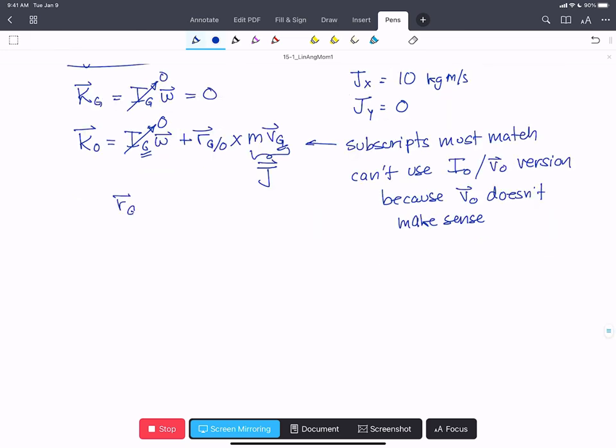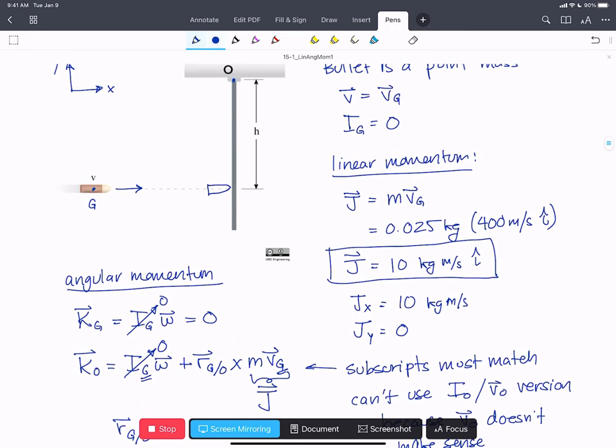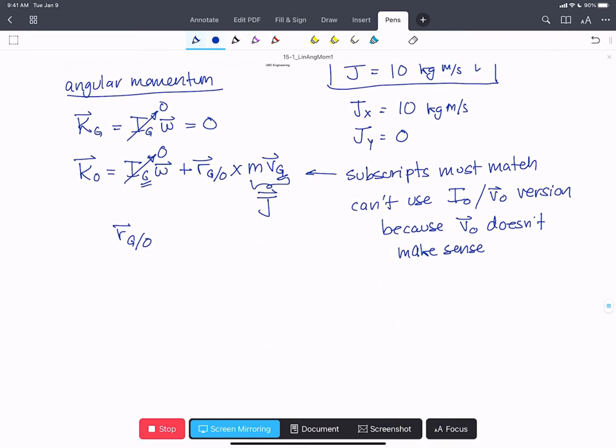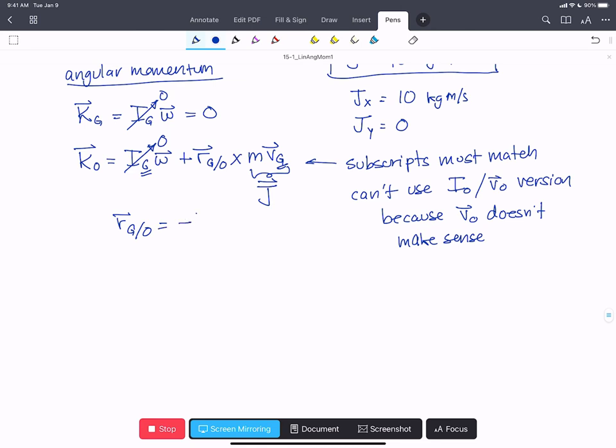So RG with respect to O, that's this vector here. Since the bullet doesn't have extent really, RG with respect to O, that's going to be negative H in the J hat direction.